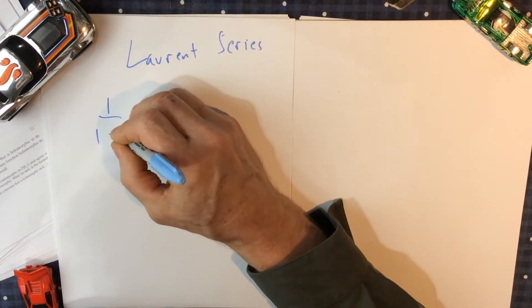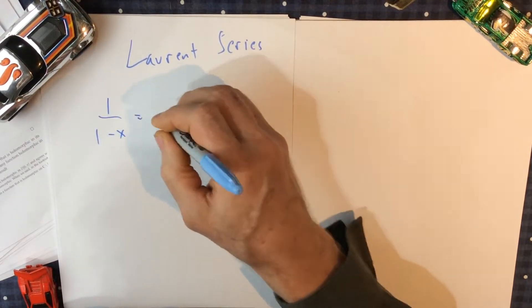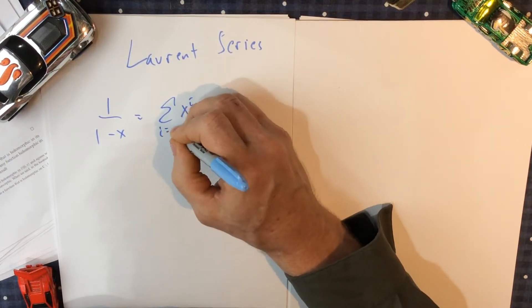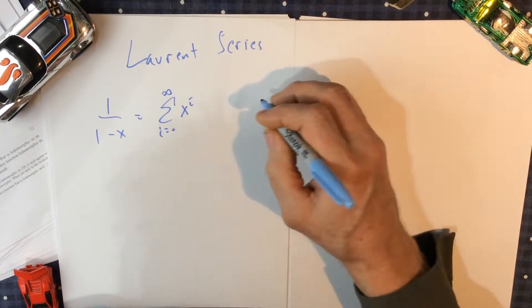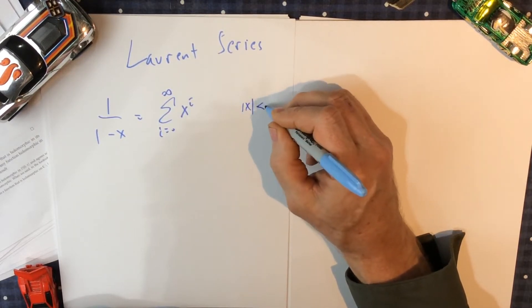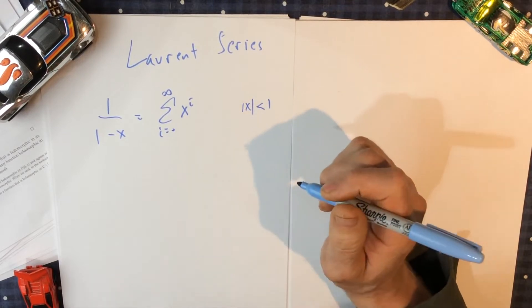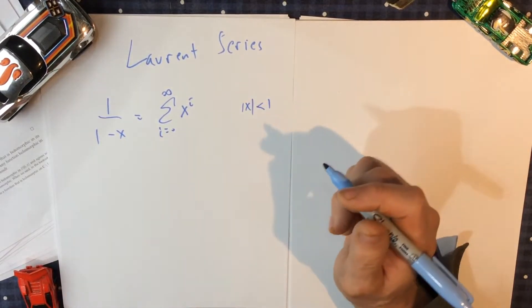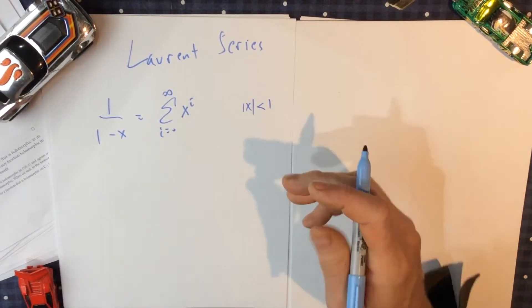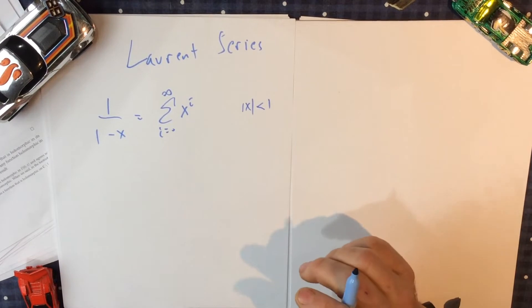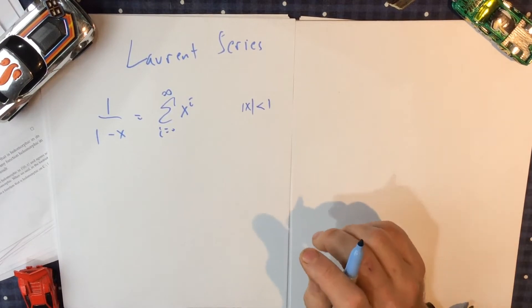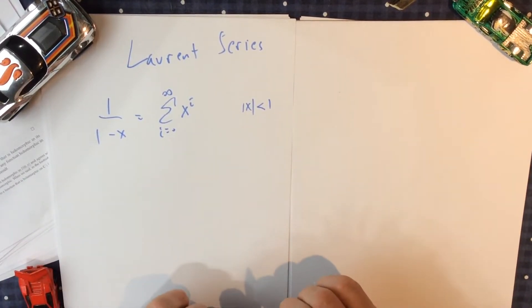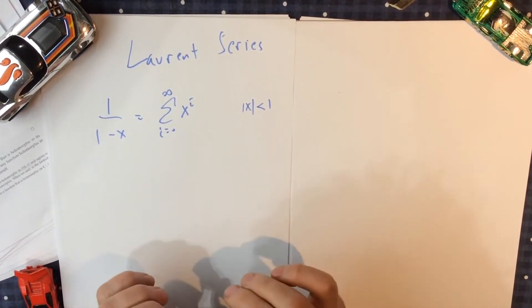Let's start with the good old-fashioned geometric series. We know this converges for |x| less than 1. The reason it has trouble at 1 is clearly that's a singularity, a pole, a difficulty with this function. But the real problem with this is that this is an inside of a disk.